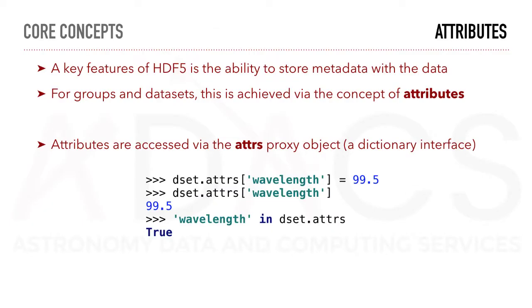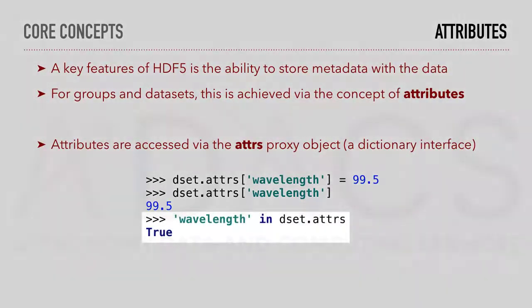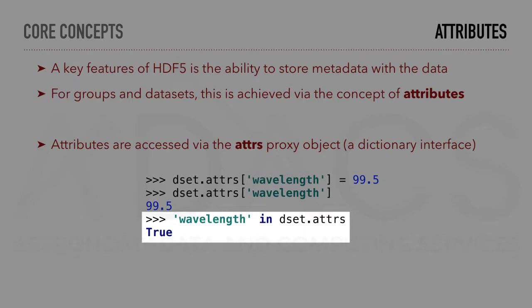A key feature of HDF5 is the ability to store metadata with the data. For groups and datasets, this is achieved via the concept of attributes. Attributes are accessed via the attrs proxy object, a dictionary interface. The following example shows how to set a value to an attribute and how to access it. We can also check if an attribute is part of the dictionary.